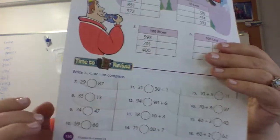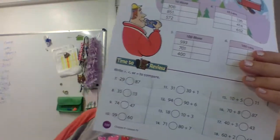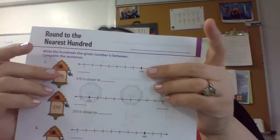And then these are comparing numbers with greater than, less than or equal to. The next one is rounding to the nearest hundred. Okay, so I'm looking at this problem right here and I'm seeing 570.